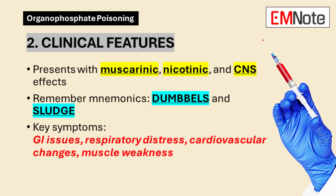Point number 2: Clinical Features of Organophosphate Poisoning. Organophosphate poisoning manifests through a variety of symptoms, often grouped as muscarinic, nicotinic, and central nervous system effects. Muscarinic effects include gastrointestinal issues,